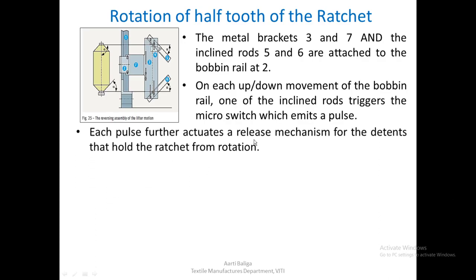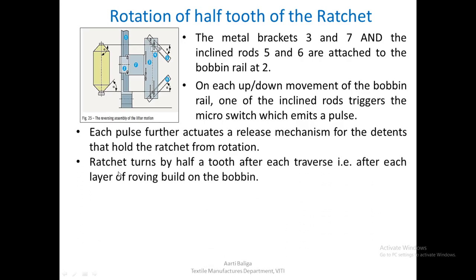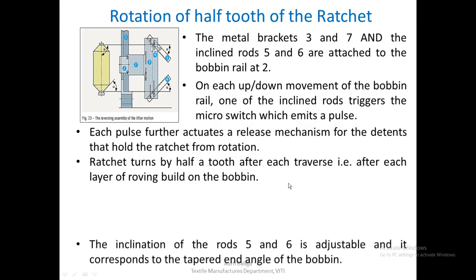Each pulse further actuates a release mechanism for the detents. As soon as a pulse is generated, it actuates a release mechanism for the detents that hold the ratchet from rotation. At that moment, the ratchet will turn by half a tooth after each traverse — that is after each layer of roving built on the bobbin.